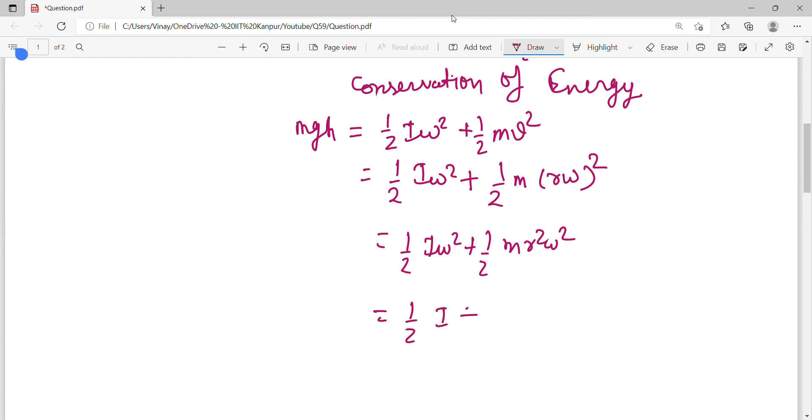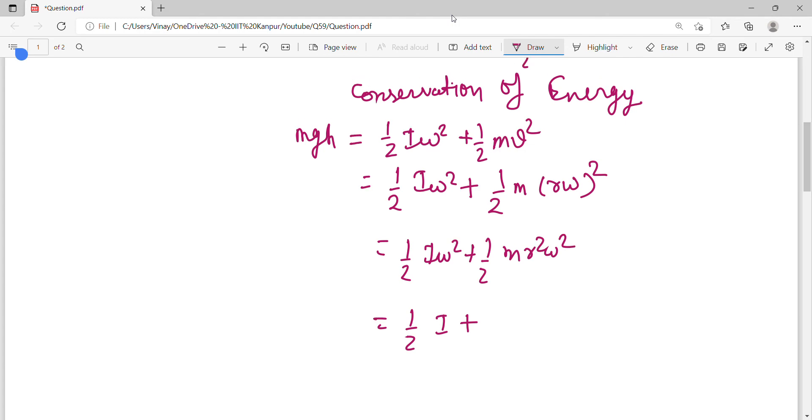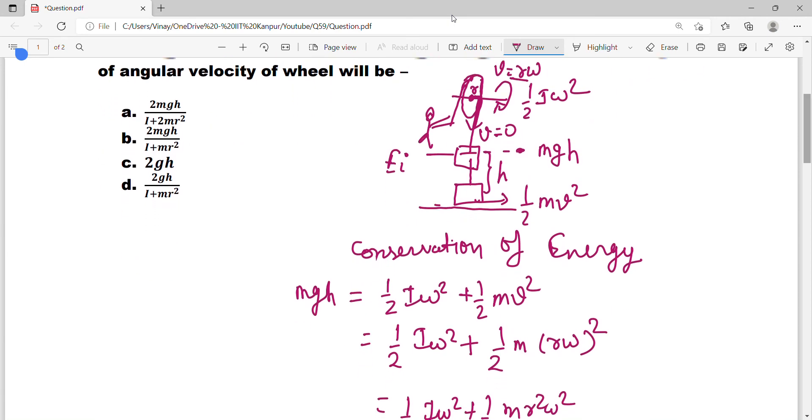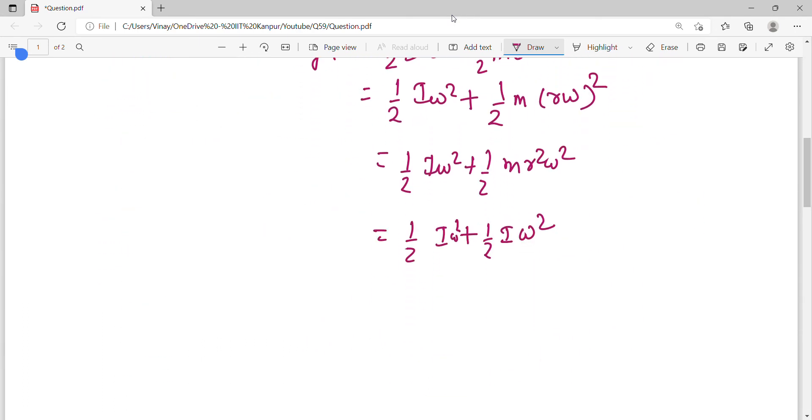So simplify this: half I omega squared plus half m r squared omega squared. You can write this as half omega squared times I plus mr squared. Pay attention, don't make the mistake that I did. The wheel's moment of inertia is separately given as I. mr squared is just mr squared, some value.